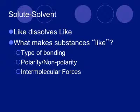Things that are alike will dissolve in each other; things that are different will not. What makes things alike? First of all, you have to think about the type of bonding. Ionically bonded things will dissolve in ionically bonded things. Covalently bonded things will dissolve in covalently bonded things. But that's not always the best indicator, so the better thing to look at is something called polarity.